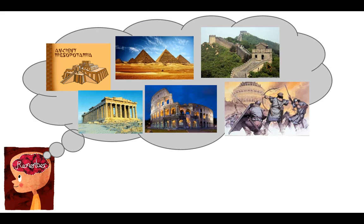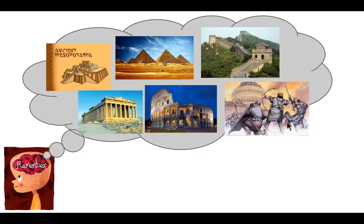Think about all the cultures we learned about this year. In every civilization, there were great innovations, but there were also hard times and setbacks. This is a picture of the fall of Rome. No matter how great your society was, you also experience hard times. Every human and every human society goes through good times and bad.